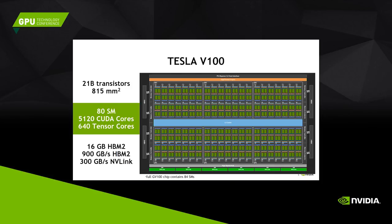Per SM we have 8 tensor cores, giving 640 tensor cores total across the V100. In terms of memory, we have 16 gigabytes of HBM2. We deliver higher peak performance and much more efficiency — I'll show a slide where we measured stream performance compared to Pascal. The NVLink architecture was also improved with more links and more bandwidth, which I'll cover shortly.